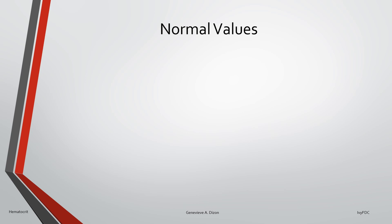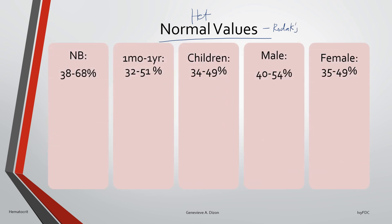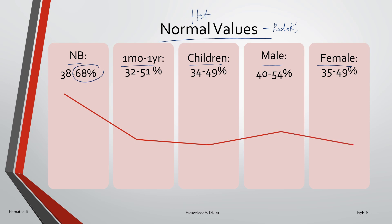To correlate hematocrit values with different conditions, we must know the normal reference values. Using Rodak's Hematology as the reference guide, hematocrit values are divided into five groups: newborn, one month to one year old, children in general, adult male, and adult female. The normal value is highest in newborns, going up to 68%, and declines as the patient matures. In adulthood, the male hematocrit level is higher compared to the female.